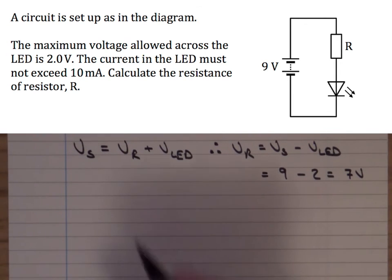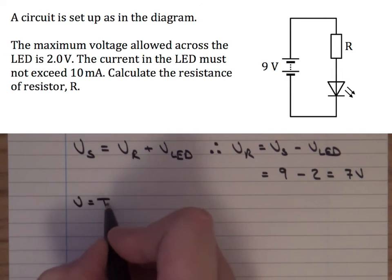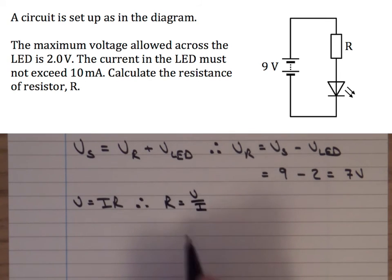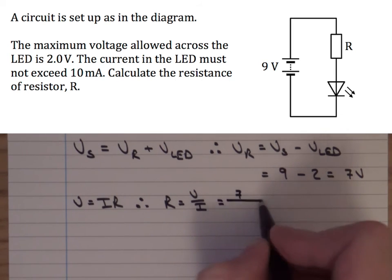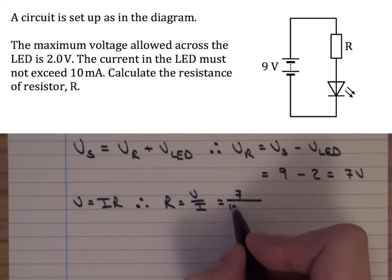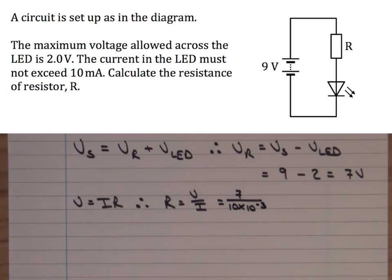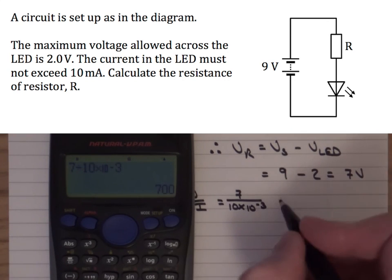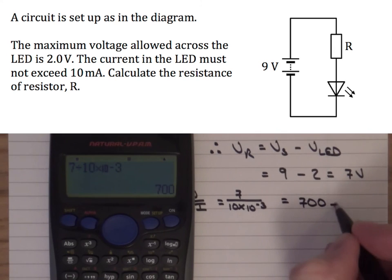Now, what we then do is we use Ohm's law, which is V equals IR. And therefore, to find the resistance of the resistor, R equals V divided by I. To find the resistance of the resistor, we need the voltage across the resistor, which we've worked out as 7 volts, and the current in the resistor itself. The current in the resistor is the same as the current in the LED. So we have 7 volts divided by our 10 milliamps, which needs to be converted to amps. So that's 10 times 10 to the minus 3. And at that point, use the calculator to work that out. 7 divided by 10 times 10 to the power of negative 3 gives us a resistance of 700 Ohms.